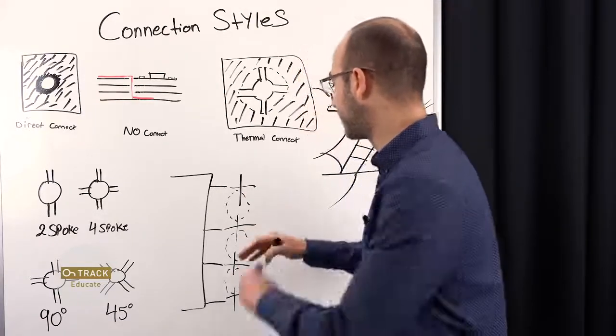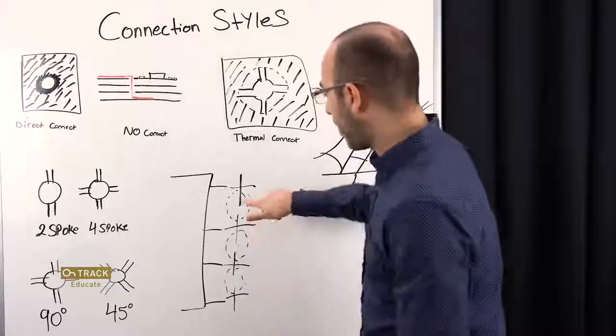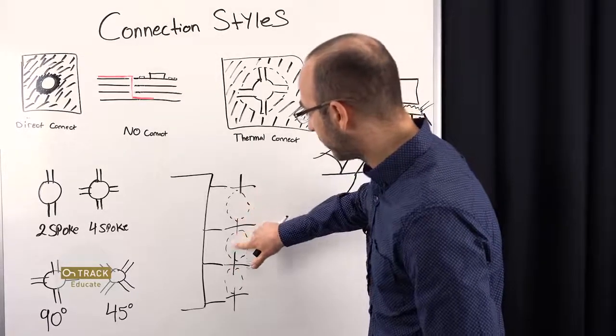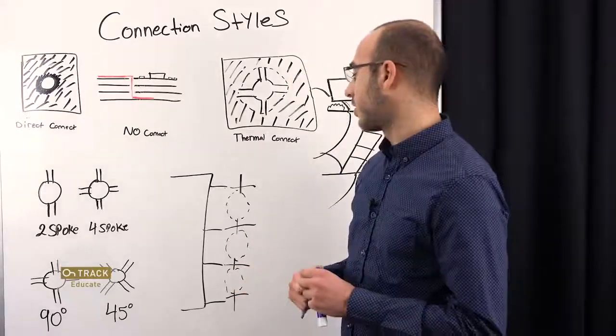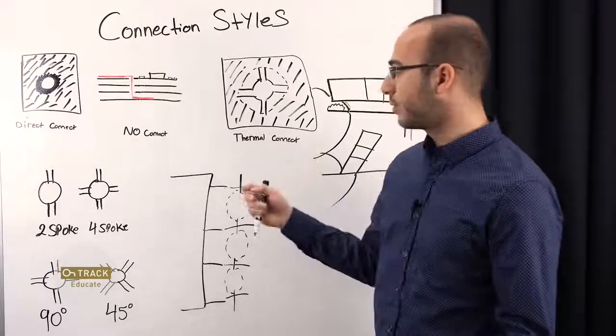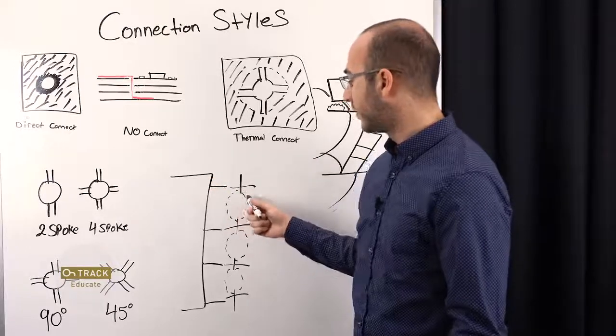These are too close to each other, and it'll create a problem. And what will happen is these spokes will go away. And this is what we call a starved thermal. And now we're kind of where we were before. We're missing a spoke.